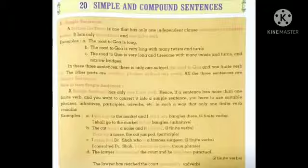Now B is, the cat heard a noise and it jumped. अब यहां पर भी देखिये, दो finite verbs हैं, अब यहां पर हम participle का use करेंगे. Hearing a noise, the cat jumped.